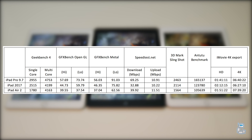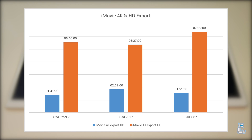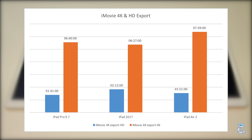The next test I ran was a full HD and 4K export on iMovie. The results indicate the 2017 iPad was the slowest at exporting full HD content, but it was actually the fastest while exporting 4K.